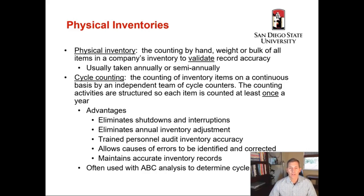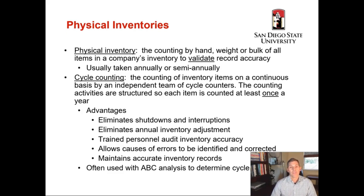After we've classified our inventory as an A, a B, or a C item, it's important to manage the inventory and make sure that what we believe we have on hand is genuinely there. It doesn't do us any good if we think we have 100 units of some component in stock, and then when we go to pull that item from inventory to use internally or sell to a customer, we're short 10, 15, or 20 pieces. There are two different methods to audit the amount of inventory we have on hand.